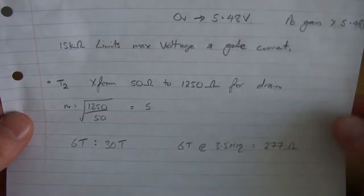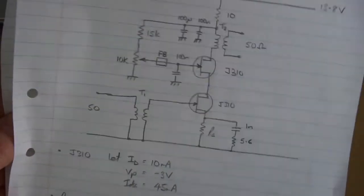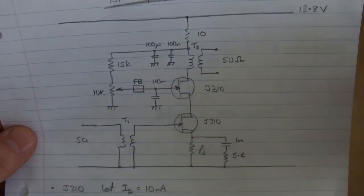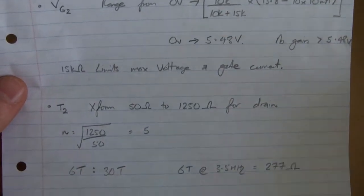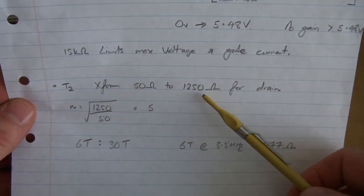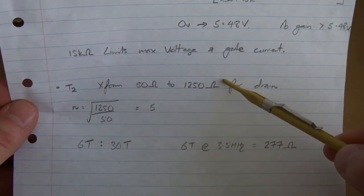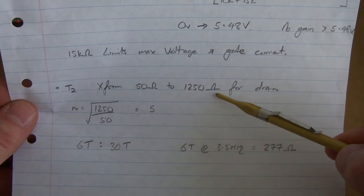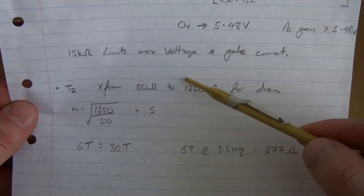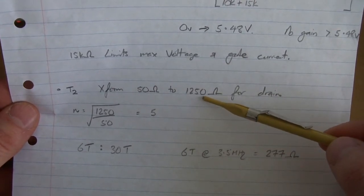T2, that's that second transformer on the drain. So there's T2 here. And there we're transforming our 50 ohm load back down to a 1250 ohms for the drain. Again, in the literature, that seemed to be quite a common value. Looking at the various turns ratios for various radios, nothing definitive. So I've decided just to elect to use 1250.